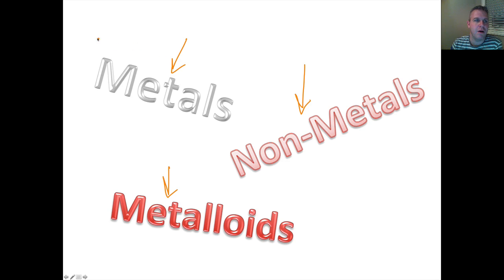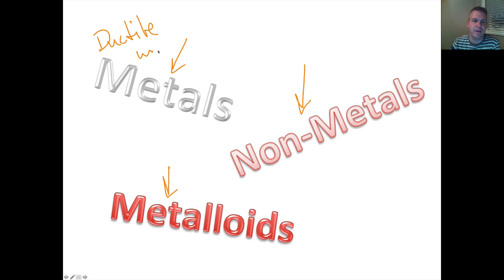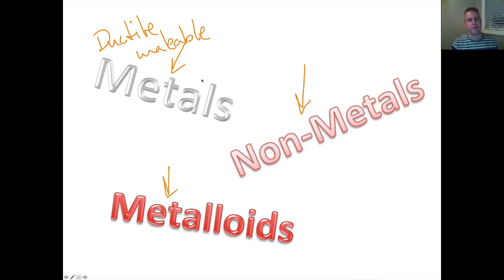Metals have similar properties. We've looked at some of these physical properties. They're ductile, which means they can be bent or stretched. They're malleable, which means that we can pound them. They're solid at room temperature, and they have high boiling and melting points.